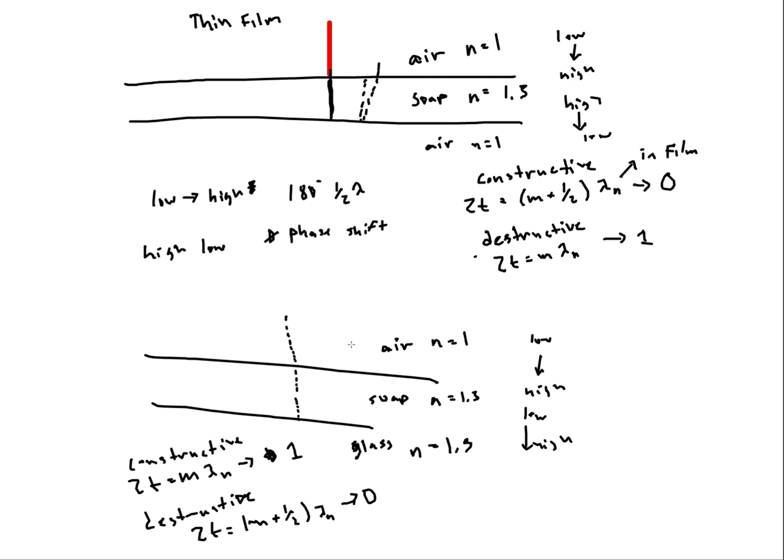So those are the types of film. Again know qualitative as well as quantitative. Know how to work with numbers as well as working with okay what if we knew the thickness and I want to know what wavelength to expect brightness. Stuff like that. They can always change it on you. So that's that. And good luck.